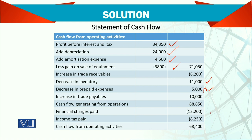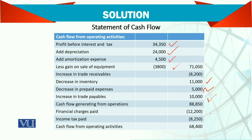Increase in trade payables is also added. The total cash generated from operating activities is 88,850,000 — a positive and huge amount. Then we deduct finance charges paid and income tax paid. So the net cash flow from operating activities is 68,400.